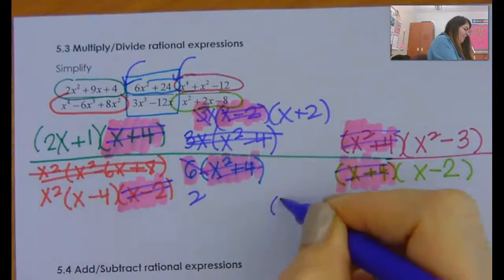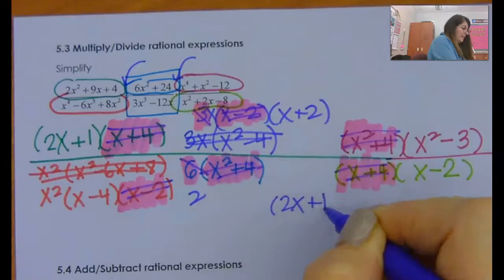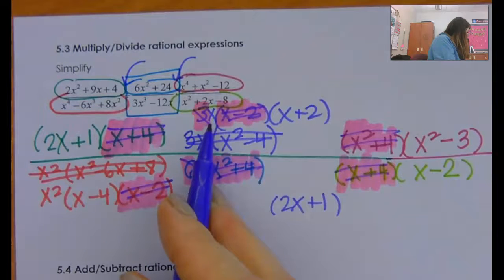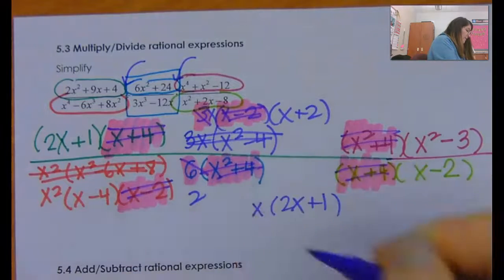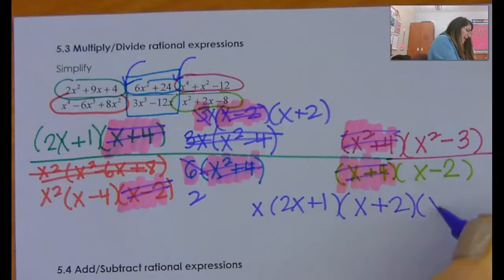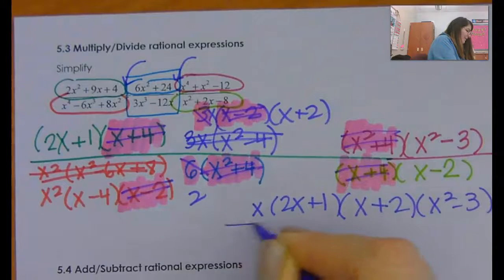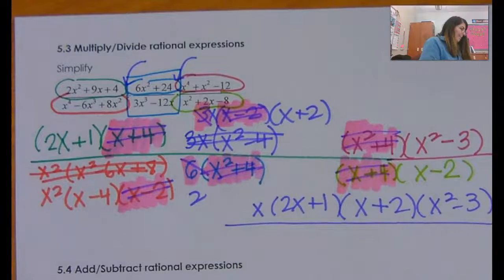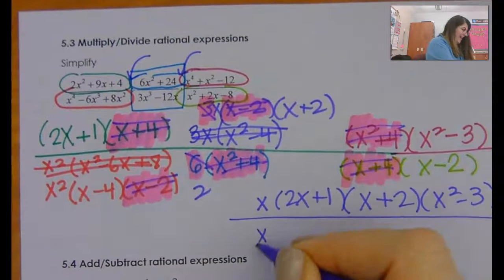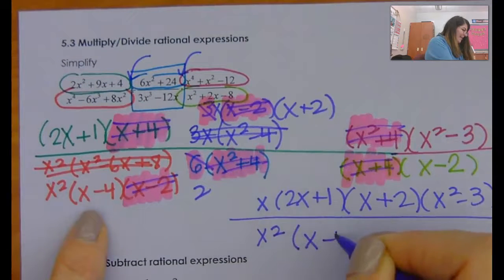So what am I left with? I have a 2x plus 1 here, I have a regular old x I'm going to put here, I have an x plus 2 and an x squared minus 3 for my numerator. Oh goodness, I didn't see this x. I've got to write it again: x squared, x minus 4.